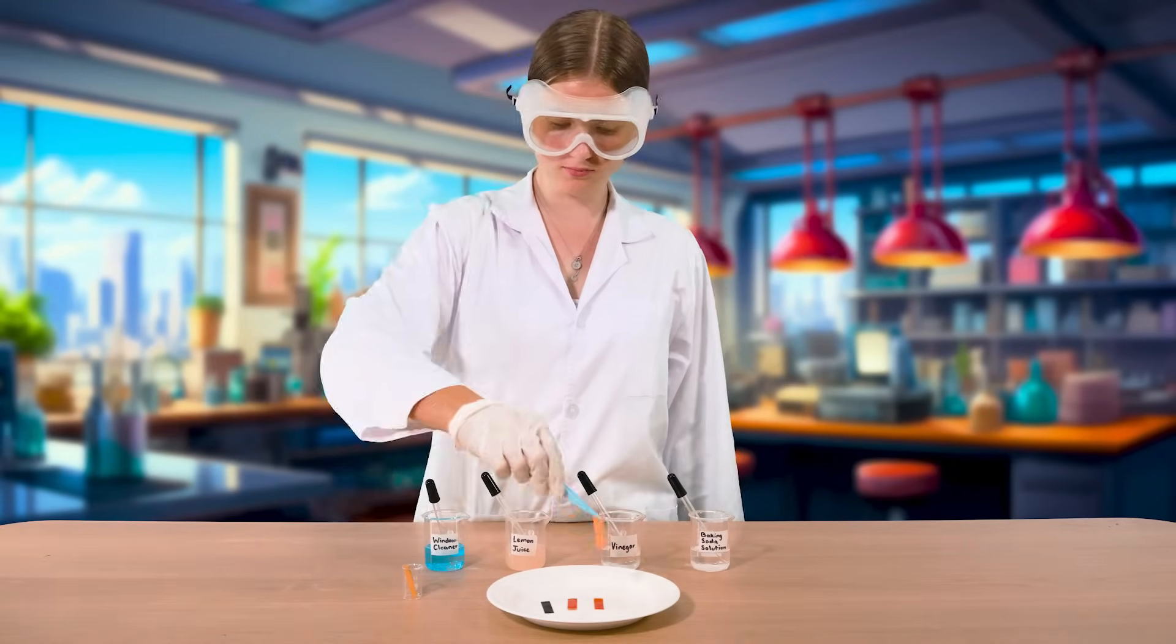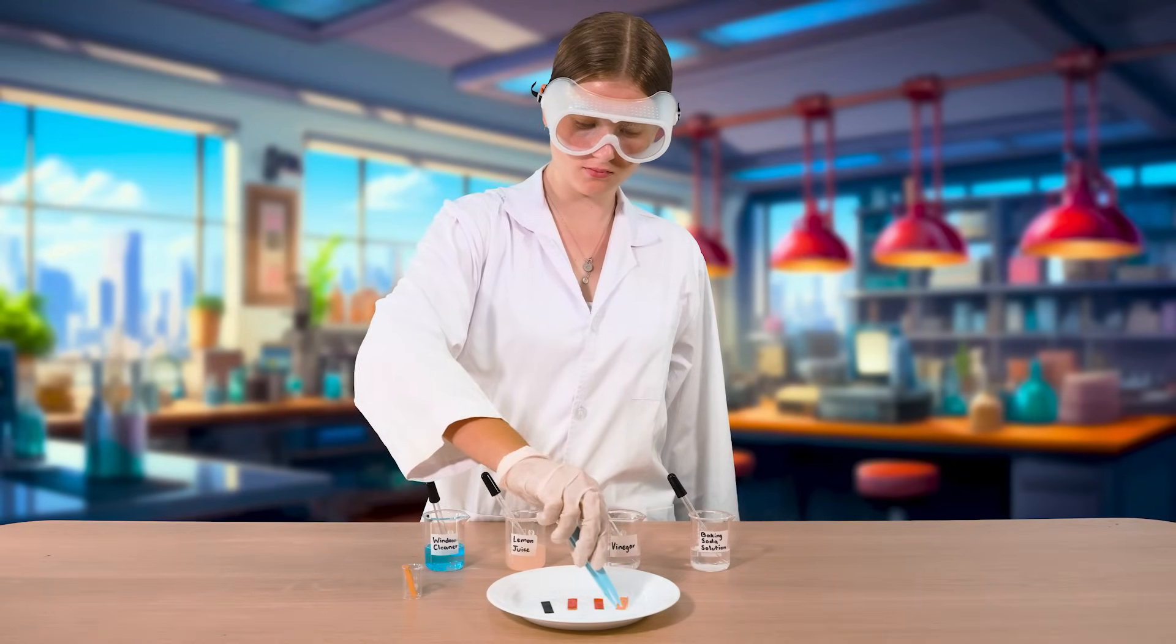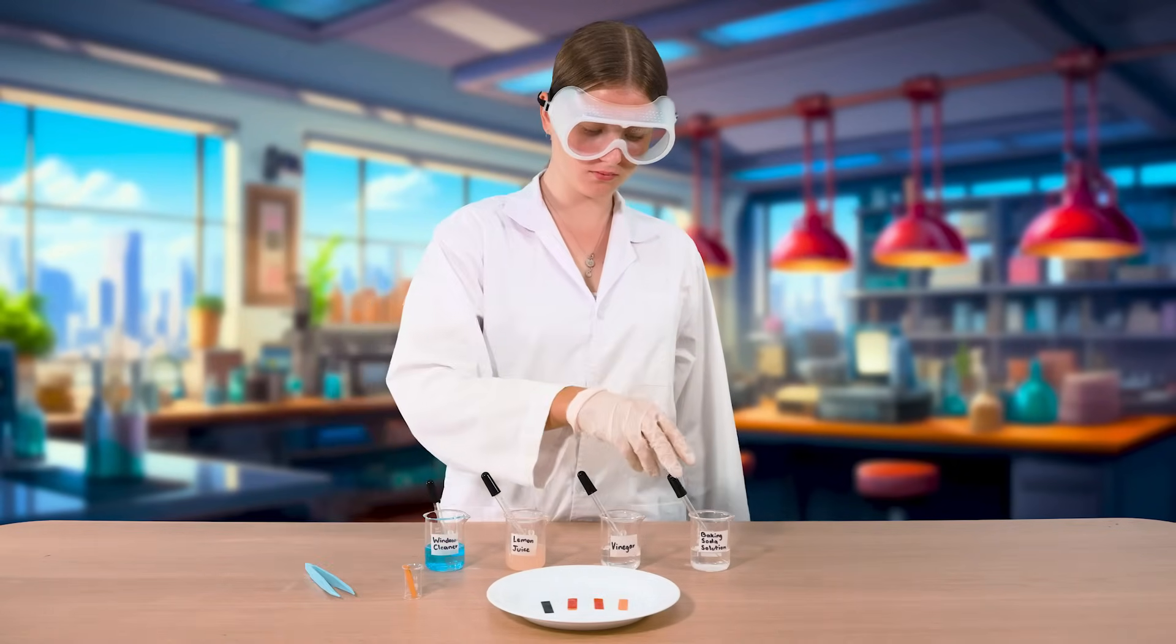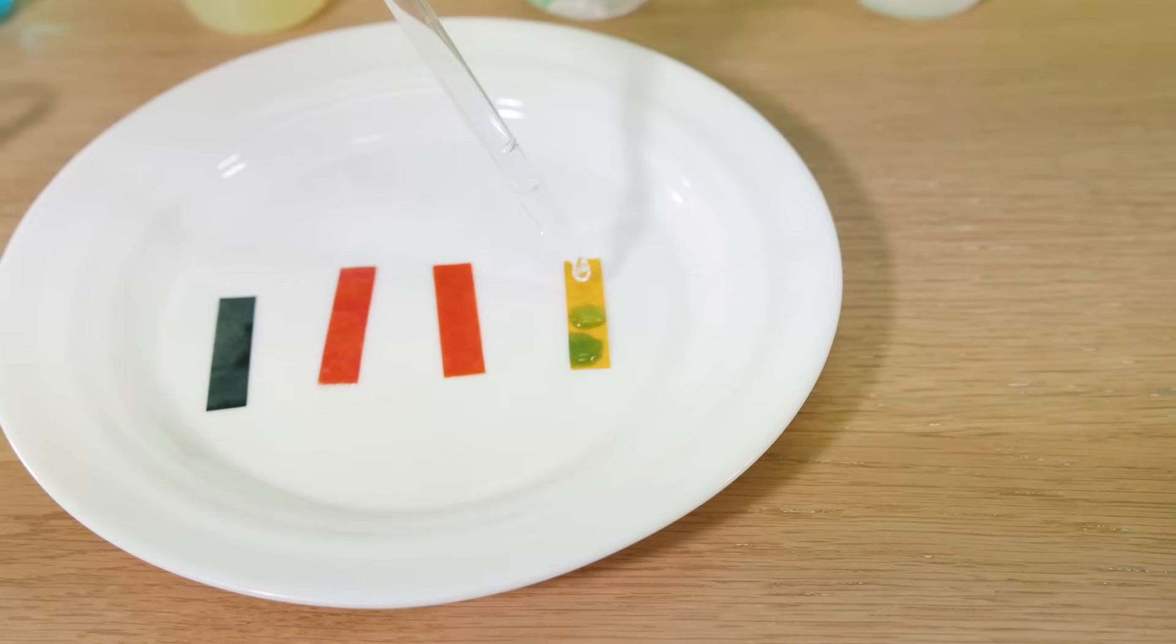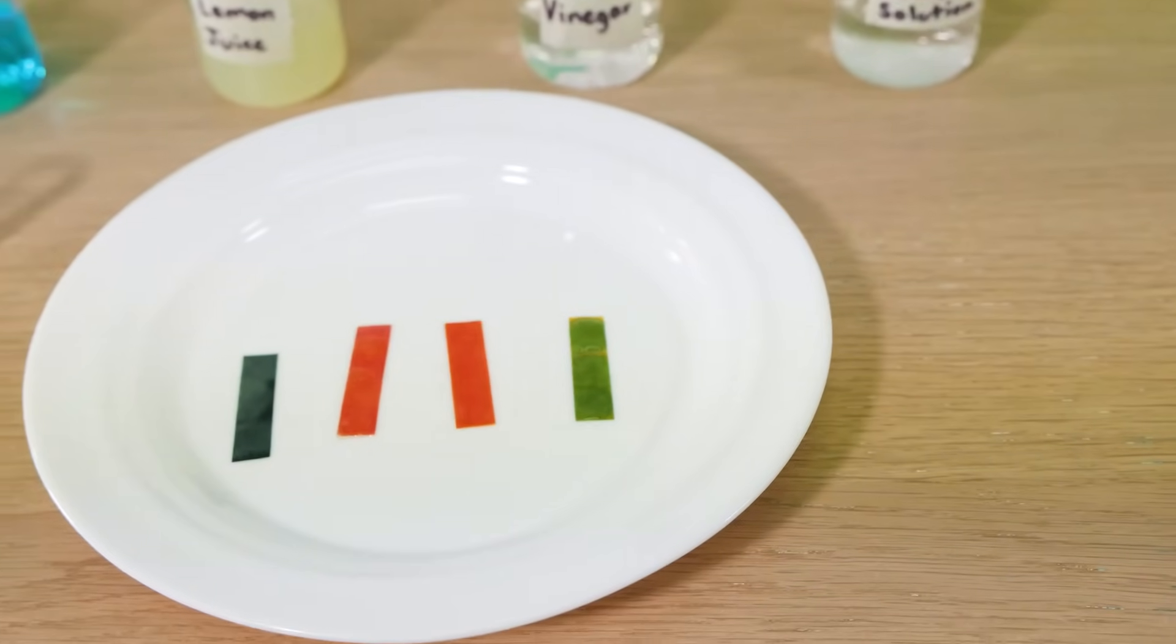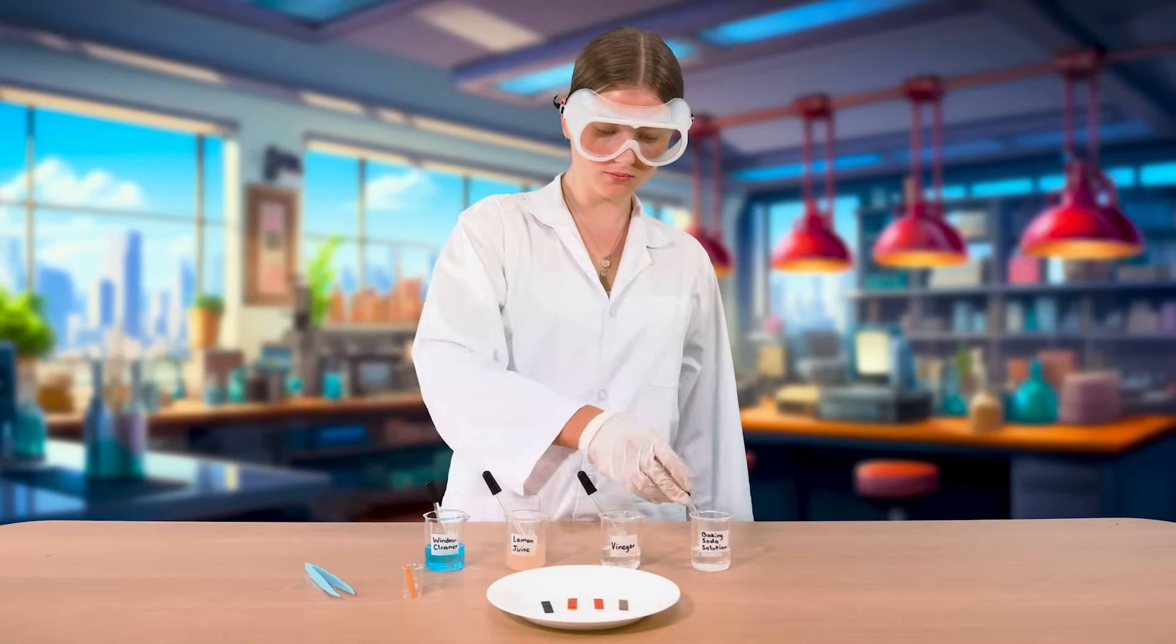Finally, we'll test the baking soda solution. The litmus paper turns a greenish blue, revealing that baking soda is a base.